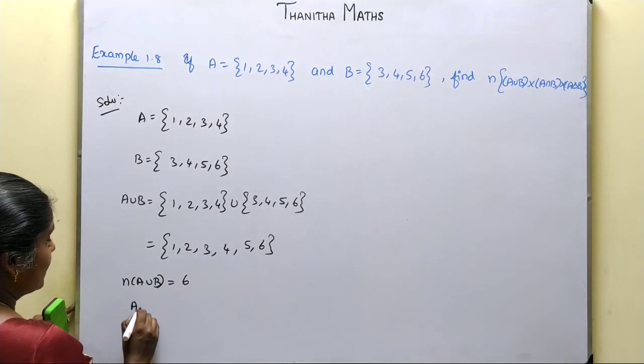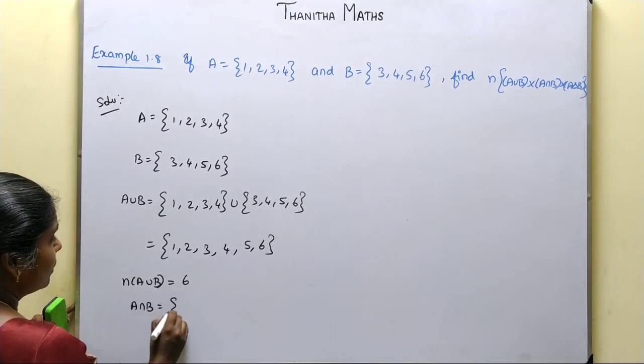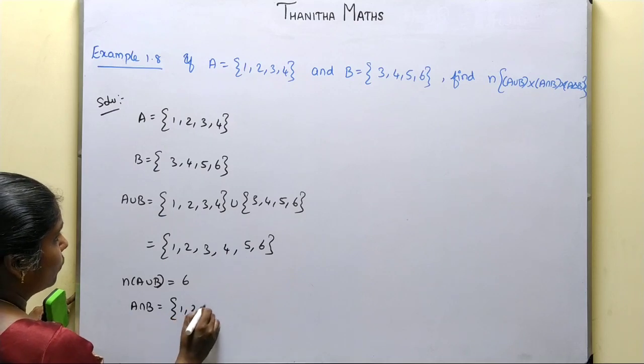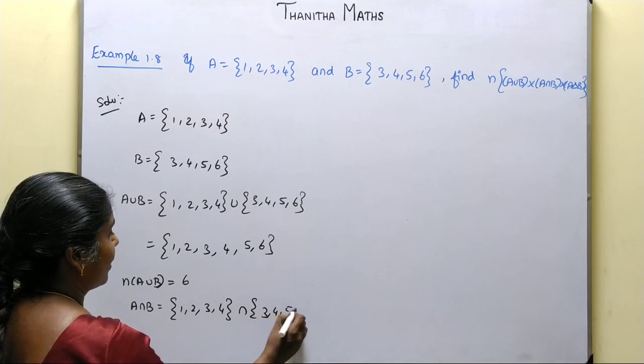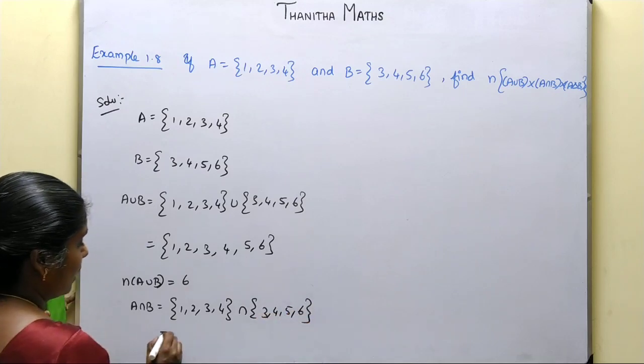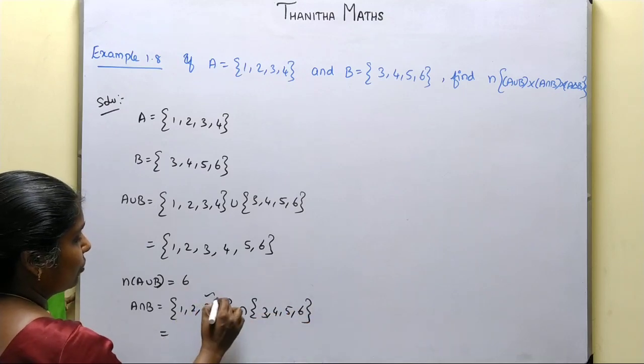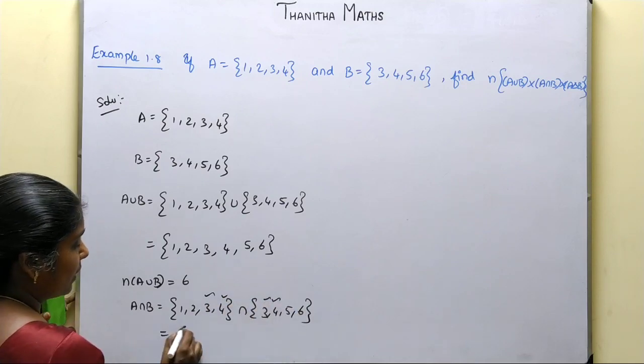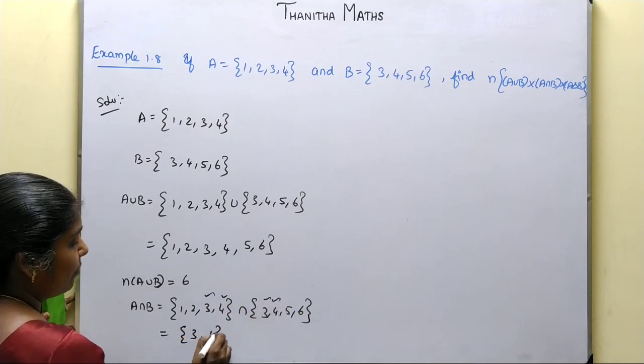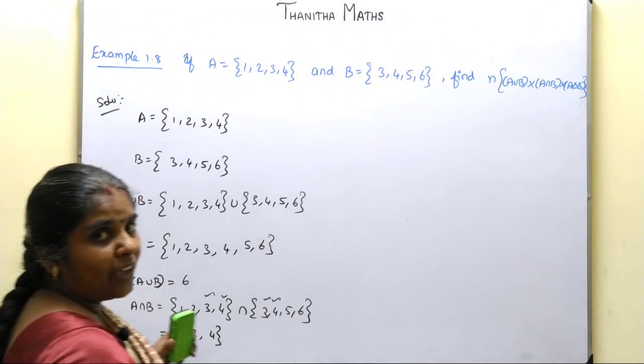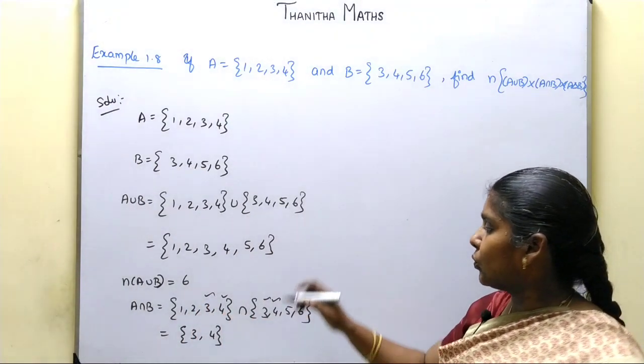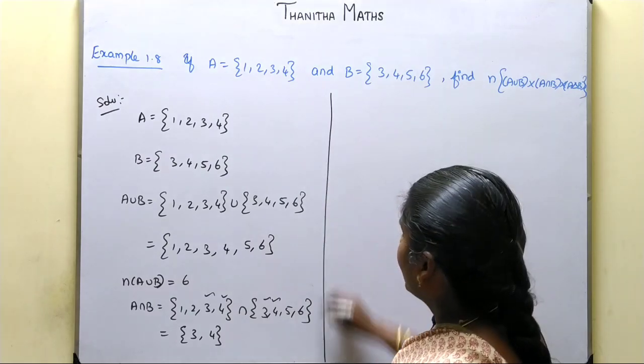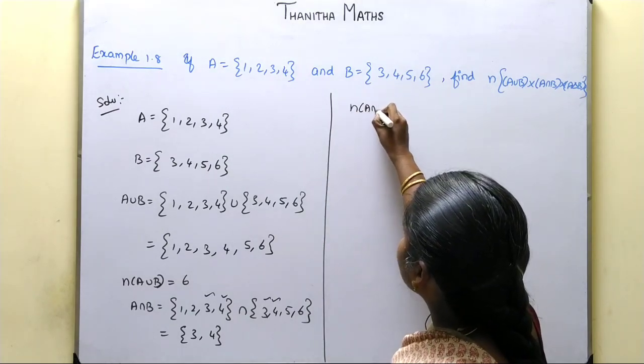Now A∩B: {1, 2, 3, 4} intersection {3, 4, 5, 6} gives us {3, 4}. So n(A∩B) is equal to 2.